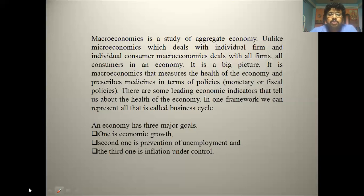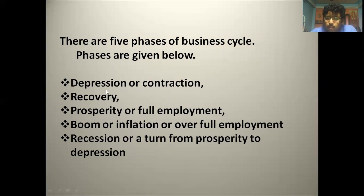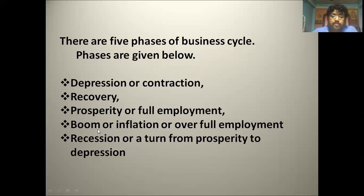There are five phases of the business cycle. One is depression or contraction, another is recovery, the next is prosperity or full employment, the fourth is boom or inflation or over-employment, and the fifth is recession — the turn from prosperity back to depression.